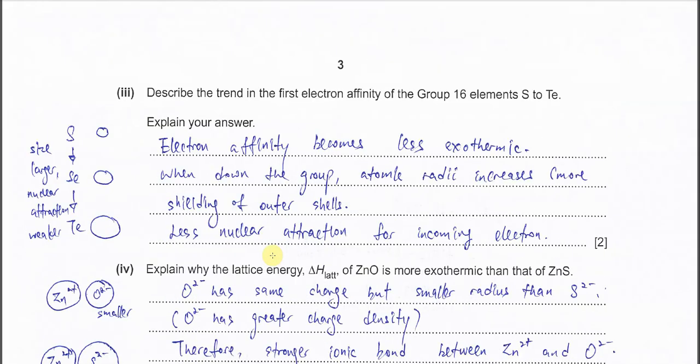Part (iii): describe the trend in the first electron affinity of group 16 from sulfur to tellurium. Down group 16, we know that the size of the atom is larger, so nuclear attraction towards the incoming electron is weaker. You need to describe whether electron affinity is less exothermic or more exothermic. Down the group, electron affinity becomes less exothermic.